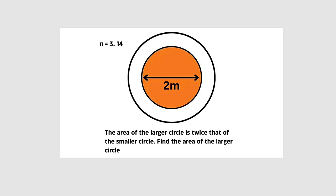Hello, good dear viewers. In this tutorial, we are going to find a solution to this simple problem, which is related to circles. The question states that the area of the larger circle is twice that of the smaller circle. Find the area of the larger circle, taking pi as 3.14.